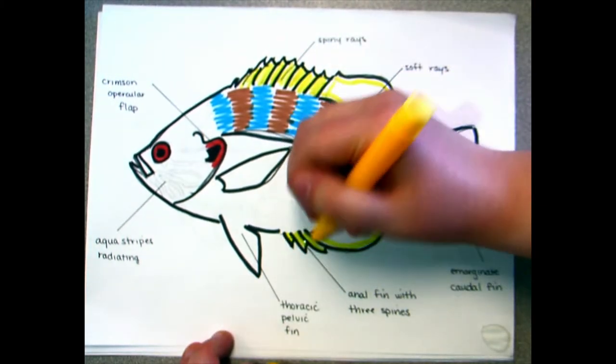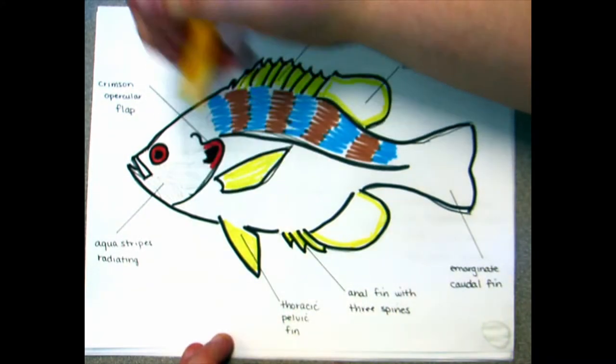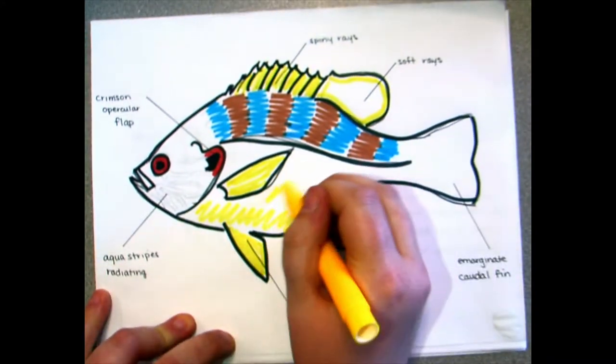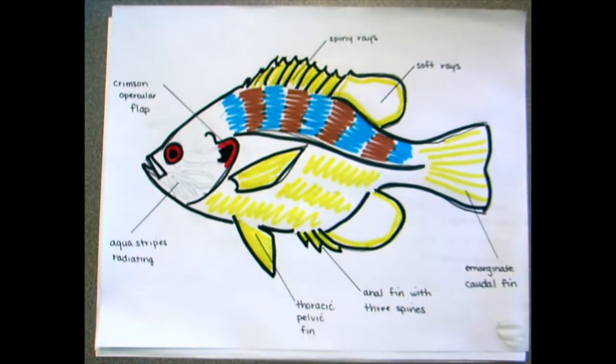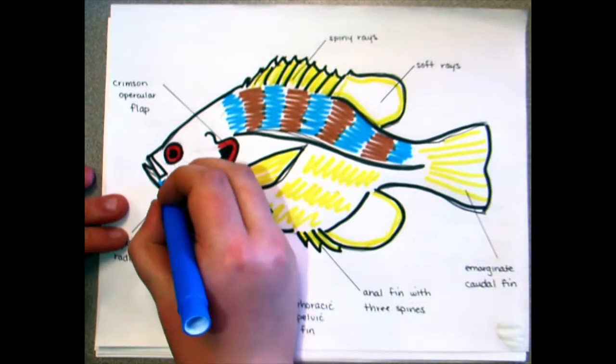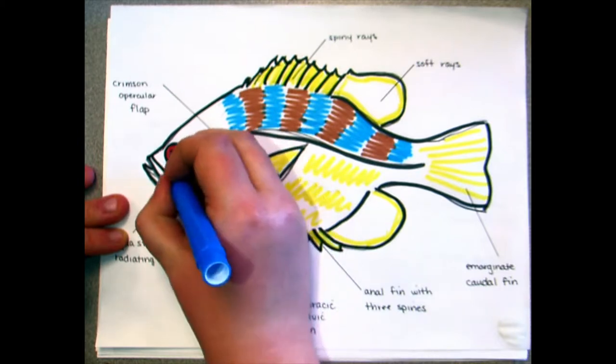Pumpkin seed are easily identified by the unique coloration of their ctenoid scales. Their breast and belly are yellow-orange, and their back and sides have 7 to 8 irregular vertical bands that can be orange, green, yellow, or blue speckled with orange, yellow, blue, and emerald spots. Radiating back from their snout over the opercular are several aqua-colored wavy stripes.